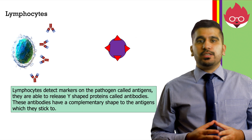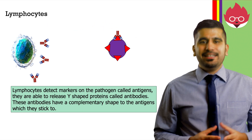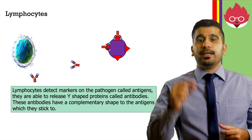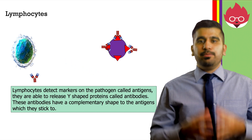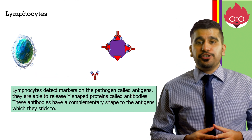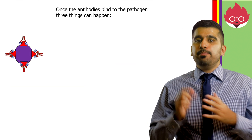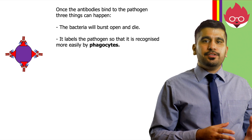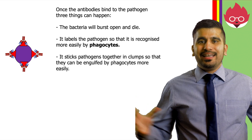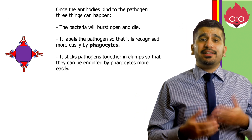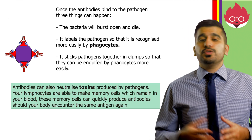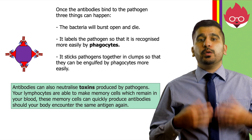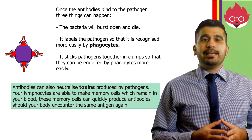Lymphocytes detect markers on the pathogen called antigens. Our normal cells also contain antigens, but it's those markers recognized as foreign that cause Y-shaped proteins called antibodies to be released. These antibodies have a complementary shape to the antigens which they stick to. Once antibodies bind to the pathogen, three things can happen: the bacteria will burst open and die, it labels the pathogen so it's recognized more easily by phagocytes, or it sticks pathogens together in clumps so they can be easily engulfed. Antibodies can also neutralize toxins produced by pathogens. Lymphocytes can make memory cells which remain in your blood and can quickly produce antibodies should your body re-encounter the same pathogen.